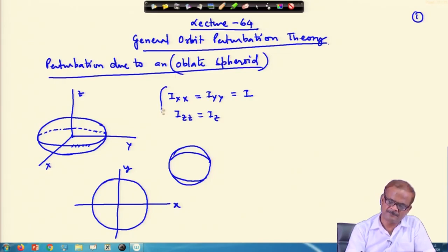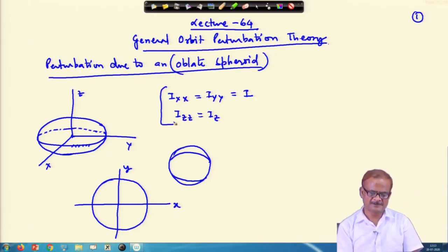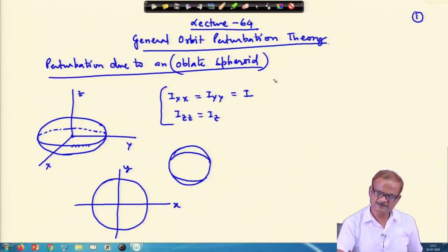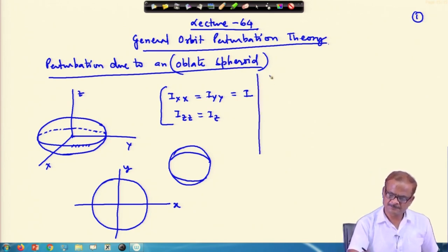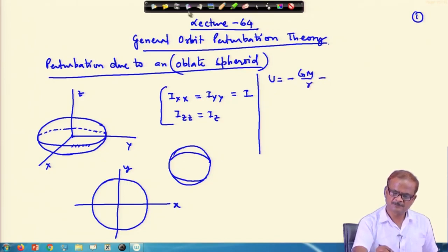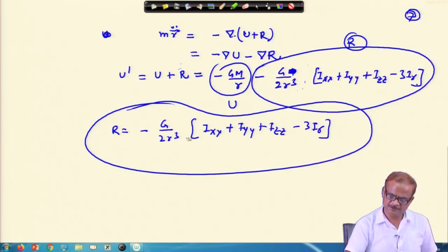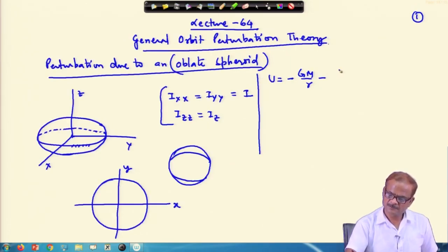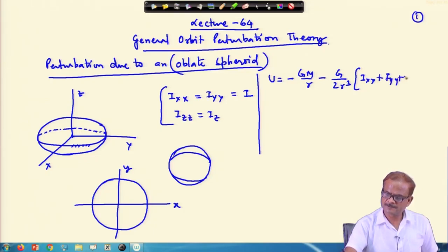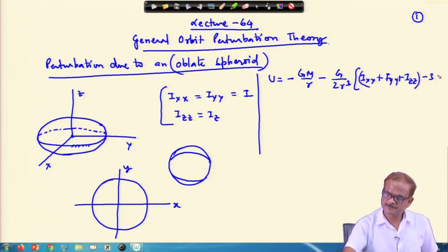It can be described using these inertia terms. Now if we use this, the expression for U can be written as minus G*M/r — this does not change — but the next perturbation term changes, which is minus G divided by 2r³, and this was I_xx plus I_yy plus I_zz minus 3*I_r.